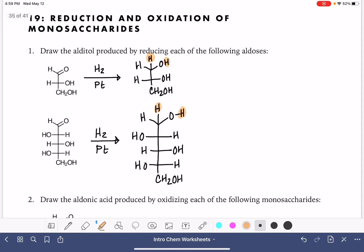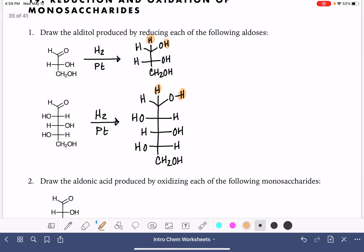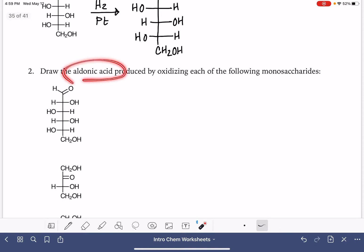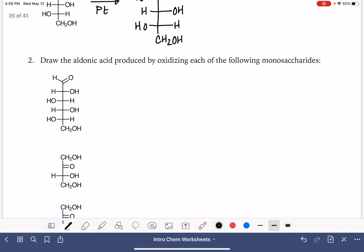Next, we're going to practice drawing the product of oxidation of some monosaccharides. The product of oxidation is referred to as an aldonic acid. The oxidation reaction is going to work only on the aldehyde portion of an aldose.